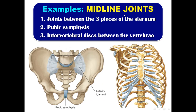All the midline joints are secondary cartilaginous joints. The midline joints include: joints between the three pieces of the sternum — the sternal angle and the xiphisternal joint — the pubic symphysis between the two hip bones, and the joints between the vertebrae, the intervertebral discs.